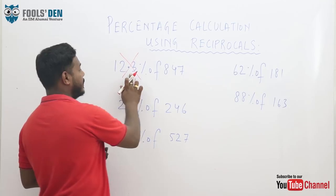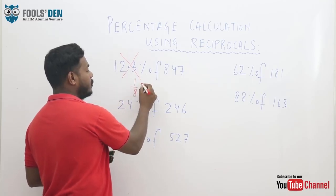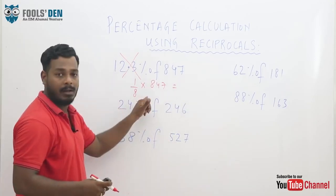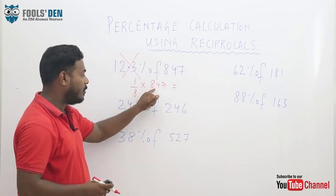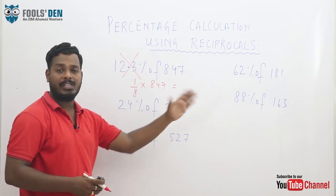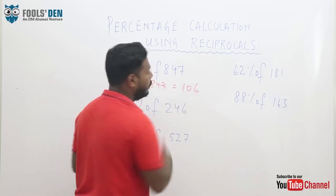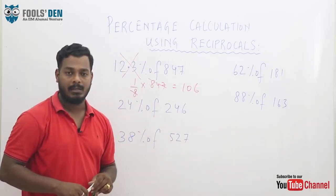This percentage we've converted into fraction. So 1 by 8 of 847. Now this is a simple division. A percentage has got converted into a simple division, which can be calculated very easily. You divide this by this, approximately the value will be 106.